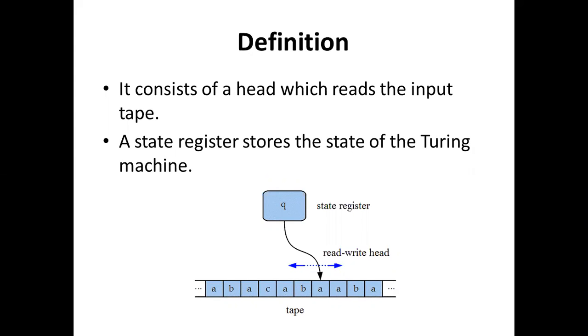A state register stores the state of the Turing machine. In this figure, the state register stores the state of the Turing machine, and the read-write head reads the input from the input tape.